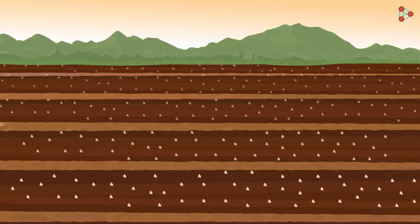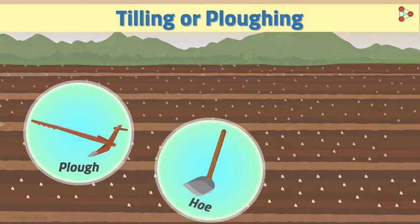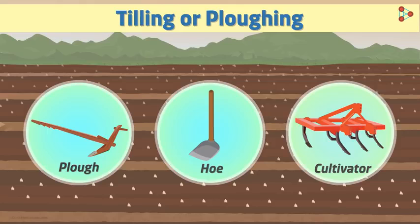Now let us look closely at the equipments that aid the process of tilling or ploughing the land. There are mainly three types of equipments used in the first stage of agriculture. A plough, hoe and a cultivator are the three major ones. We will study each of them in detail in our next video.